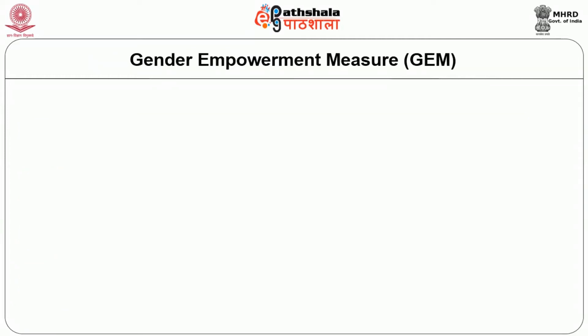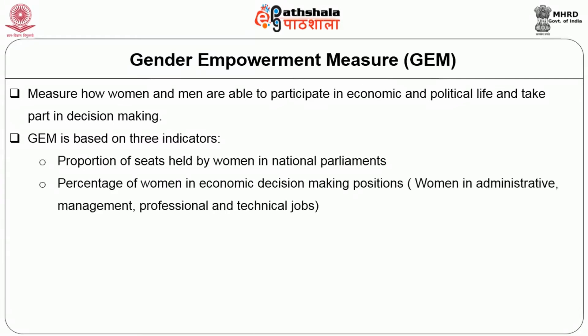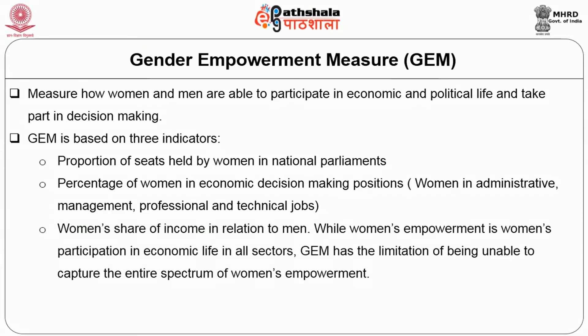The Gender Empowerment Measure, GEM, according to UNDP, measures how women and men are able to participate in economic and political life and take part in decision making. GEM is based on three indicators: the proportion of seats held by women in national parliaments; percentage of women in economic decision-making positions (administrative, management, professional and technical jobs); and women's share of income in relation to men. GEM has the limitation of being unable to capture the entire spectrum of women's empowerment.